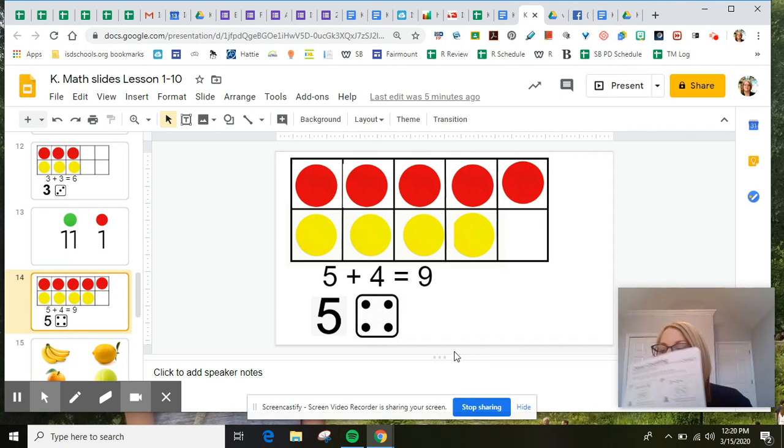On your paper today, that's the very first problem you have. Five and four is the same as nine. Now, when you take a look at the frog, he's going to show you a number and a number cube, just like I did, so you can figure out your part, part, total.